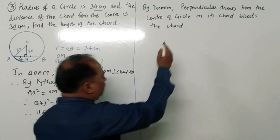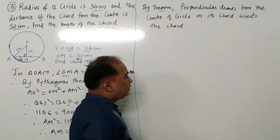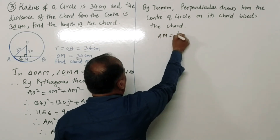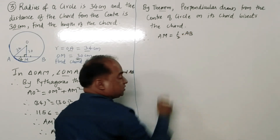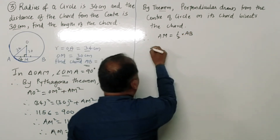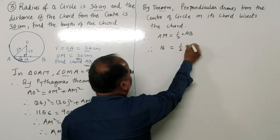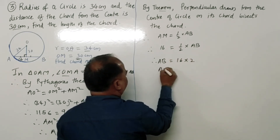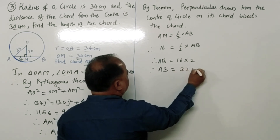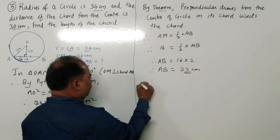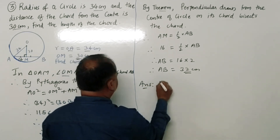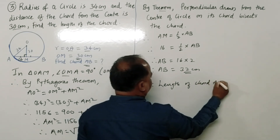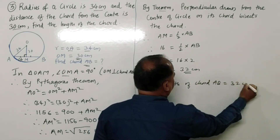AM = 16 cm. By the theorem, the perpendicular from the center bisects the chord, so AM is half of chord AB. Therefore 16 = (1/2) × AB, which gives AB = 16 × 2 = 32 centimeters. The length of the chord AB is 32 centimeters.